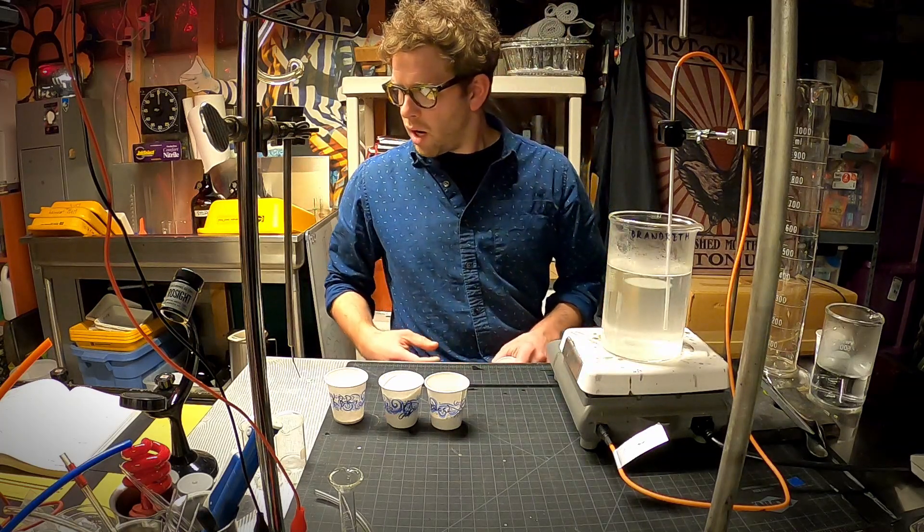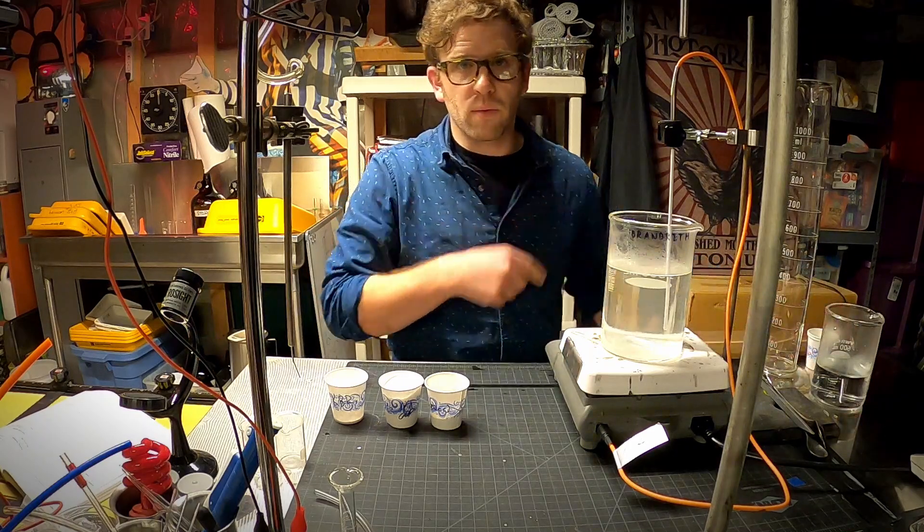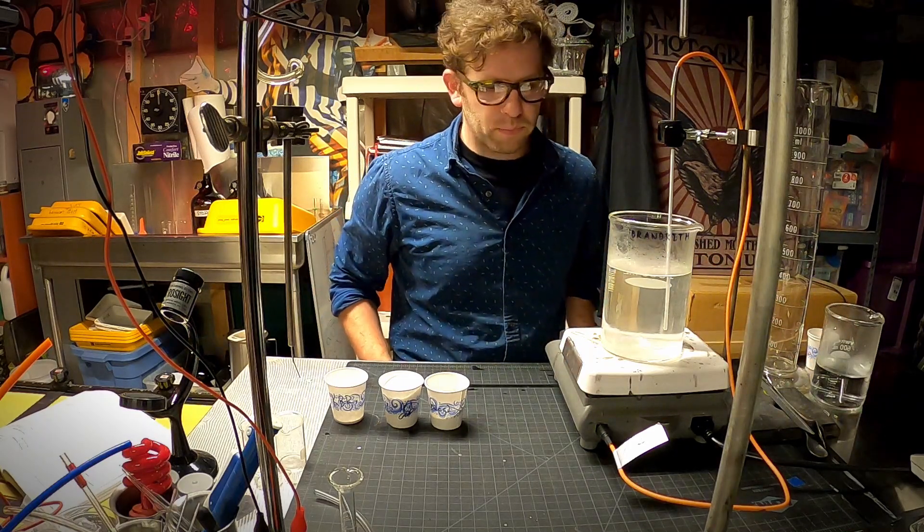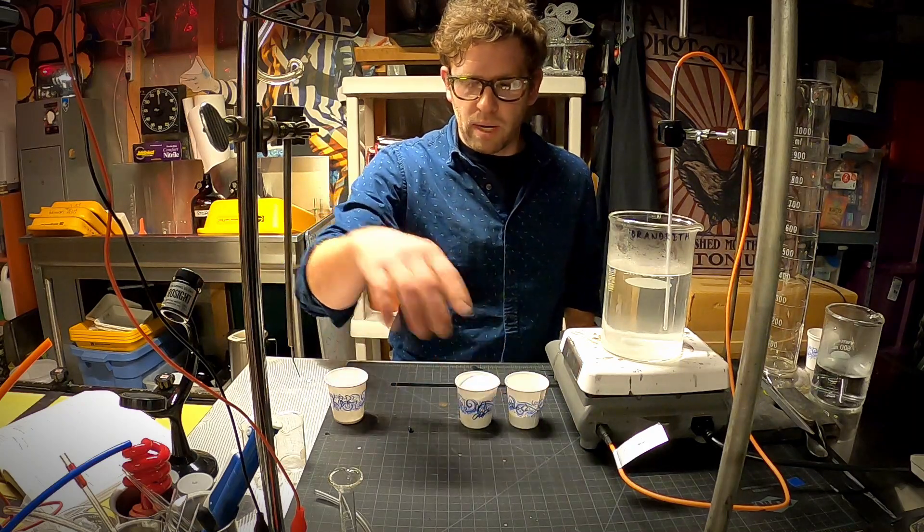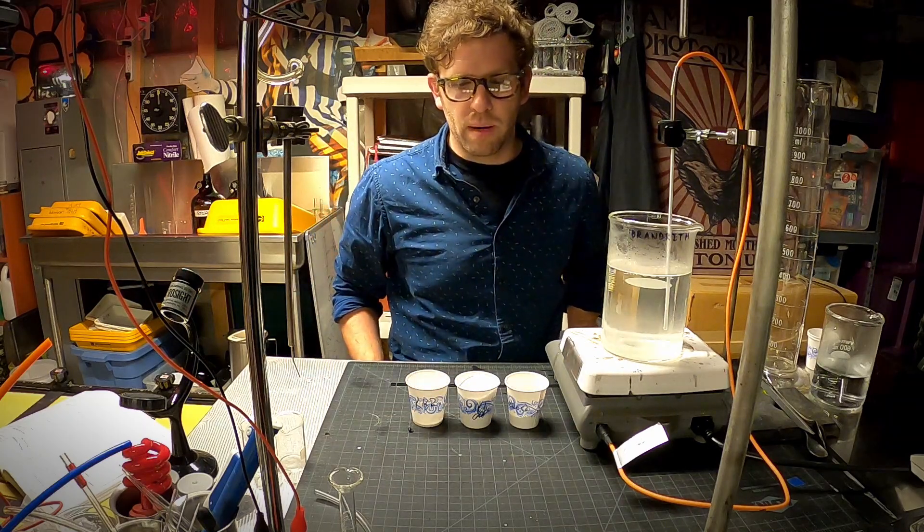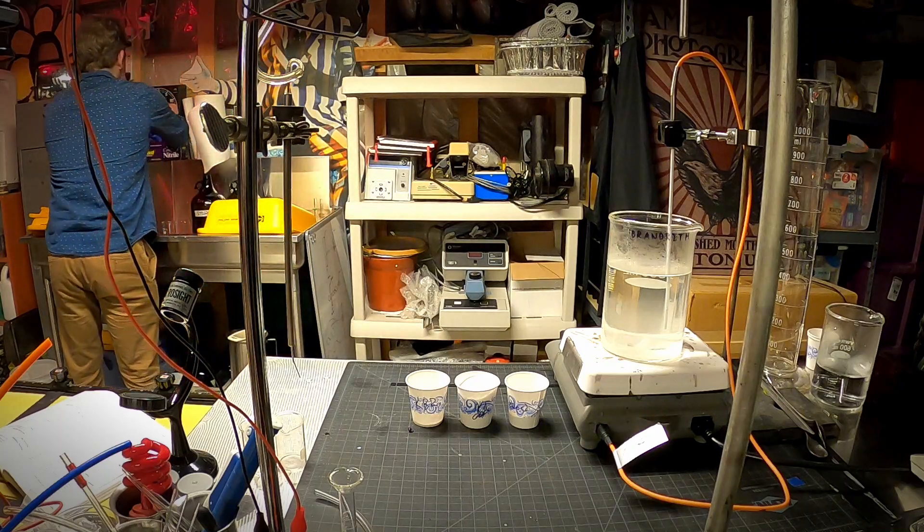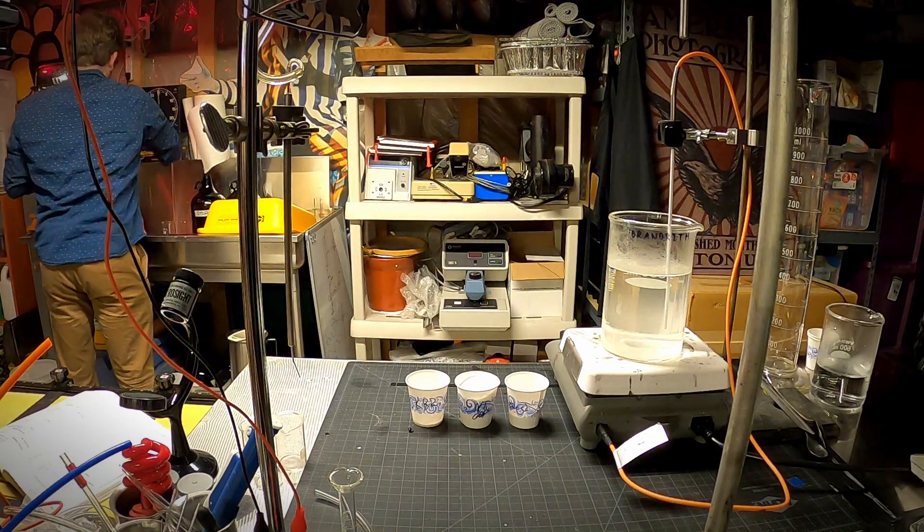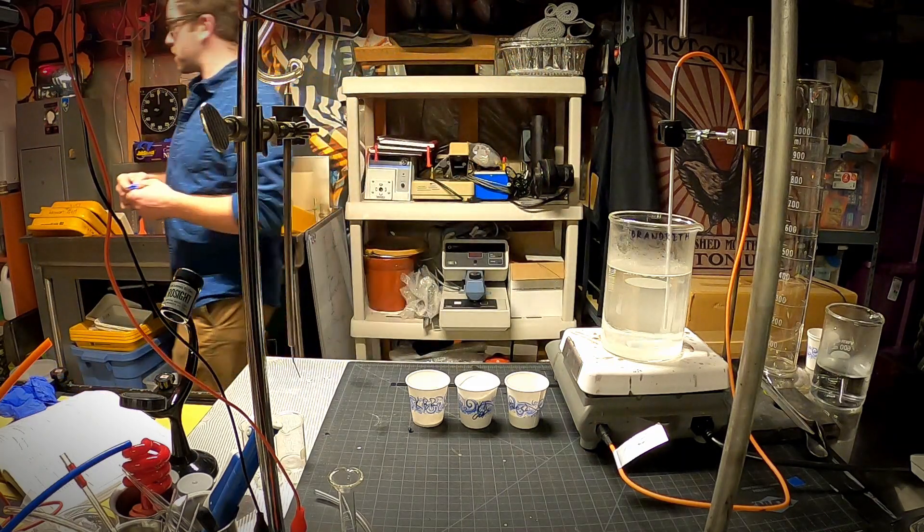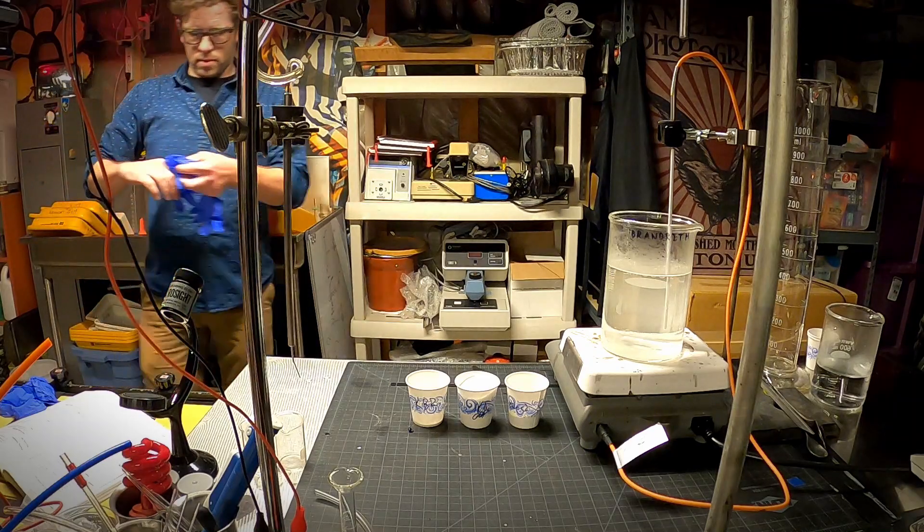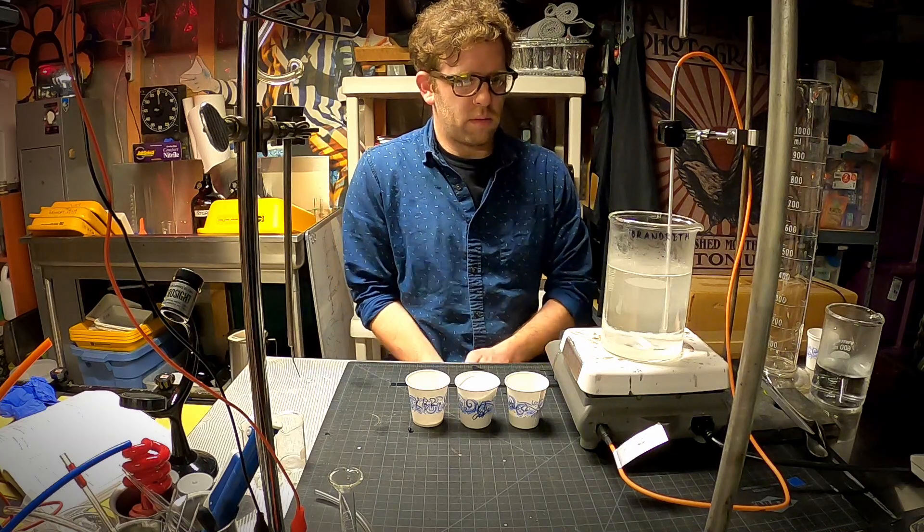Just to give you an idea, I have three grams of metol. That was 45 grams of sodium sulfite. Once this is dissolved, we're going to add 12 grams of hydroquinone, 80 grams of sodium carbonate, and two grams of potassium bromide. I should be wearing my gloves. I'm just going to kick on a pair of gloves while this mixes.